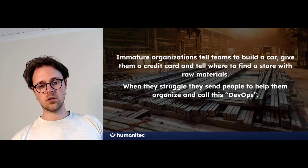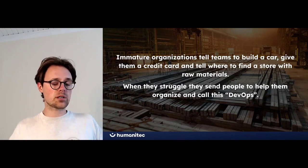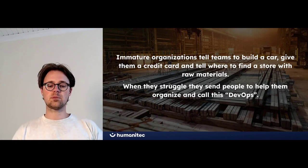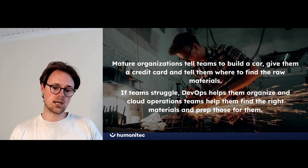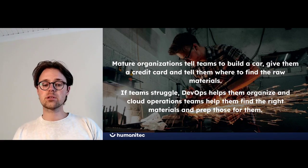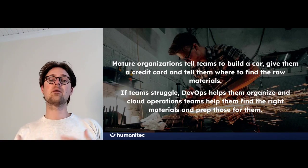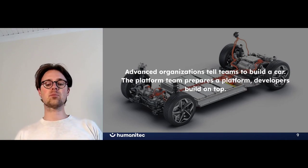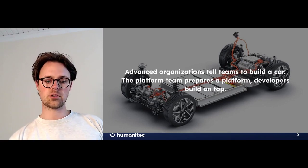Let me use an analogy of the automotive industry. An immature organization would tell a team to build a car, give them a credit card, and say you can find your raw materials in this store. When these teams struggle, they'd send in people to help organize — and call that DevOps. A mature organization adds cloud operations teams to find and prep the right materials. And an advanced organization has the platform team prepare a platform that developers build on top of. That is common practice in almost every industry, and there's no reason it shouldn't work in software.